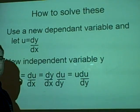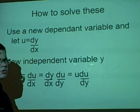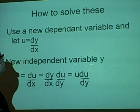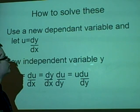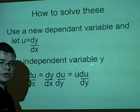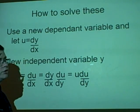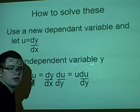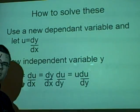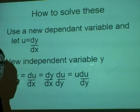How to solve these? Now, usually we've been doing it another way, using separation of variables, and this way we introduce a new dependent variable which we call u, and u is equal to dy over dx. And similarly we introduce the new independent variable y, which will be the one that's already in the equation.